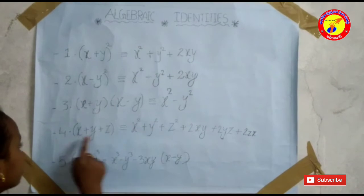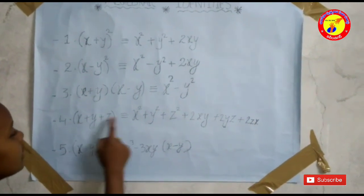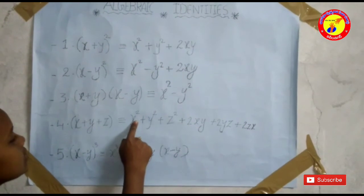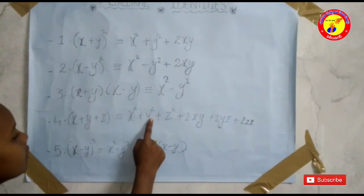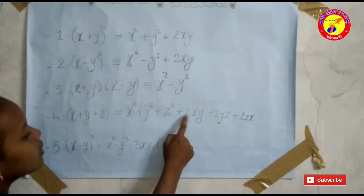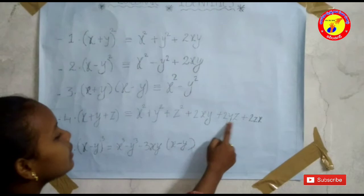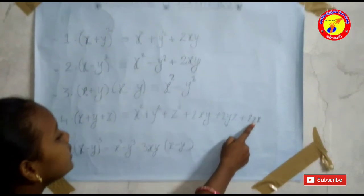Fourth, x plus y plus z all square is equal to x square plus y square plus z square plus 2xy plus 2yz plus 2zx.